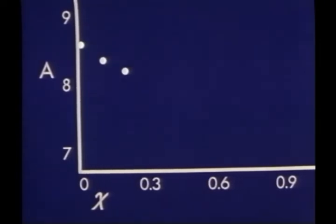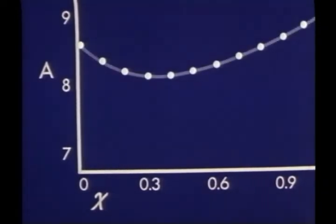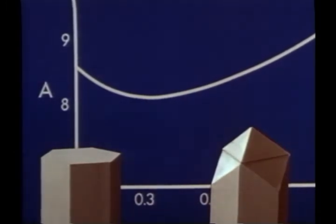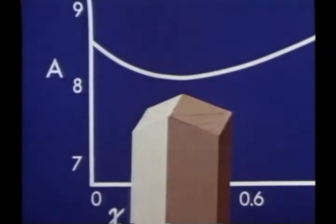Substituting in this formula and calculating values for x equals zero, x equals one-tenth, and so on, then plotting these values at x equals four-tenths, six-tenths, and so on, and connecting these points gives us a graph which shows that the area is at a minimum when x lies between three-tenths and four-tenths. In other words, the prism with the flat base and the prism with the very pointed base have more surface area and would require more material to build than the intermediate one.